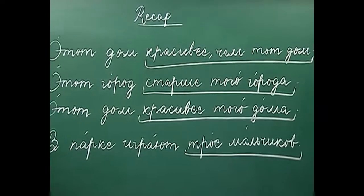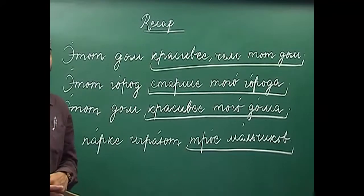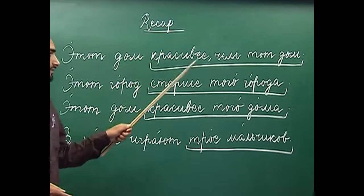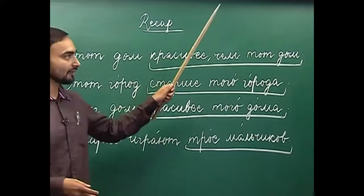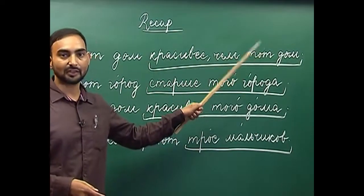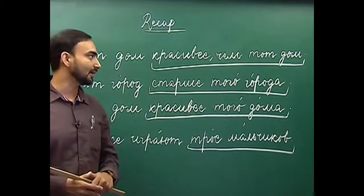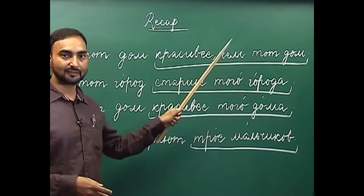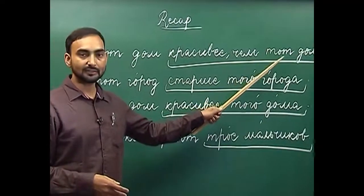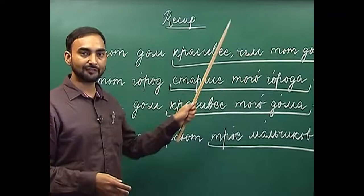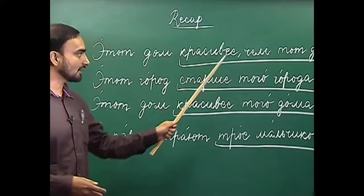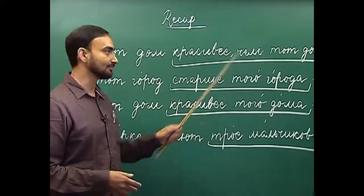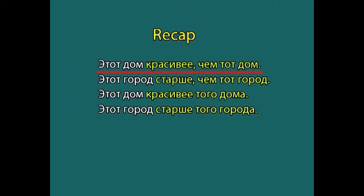How do we use the comparative degree of an adjective or adverb? We can use it in two ways. The first is when we use the nominative case of the noun with which something is compared, along with the word 'chem', preceded by a comma. For example: 'etot dom krasivee chem tot dom' — This house is more beautiful than that house.